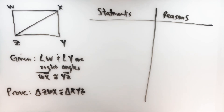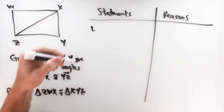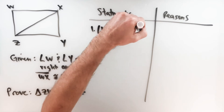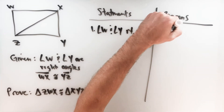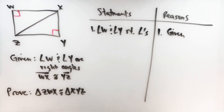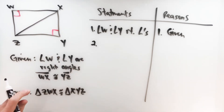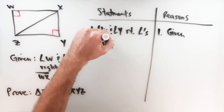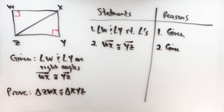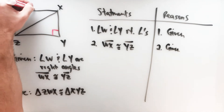To set up our proof, the first step is to start with what you know. Angle W and angle Y are right angles — given. It's helpful to mark the picture: little boxes in the corners for the right angles. Next, get the other piece of given information: segment WX is congruent to segment YZ — also given. Mark those in the picture as well.